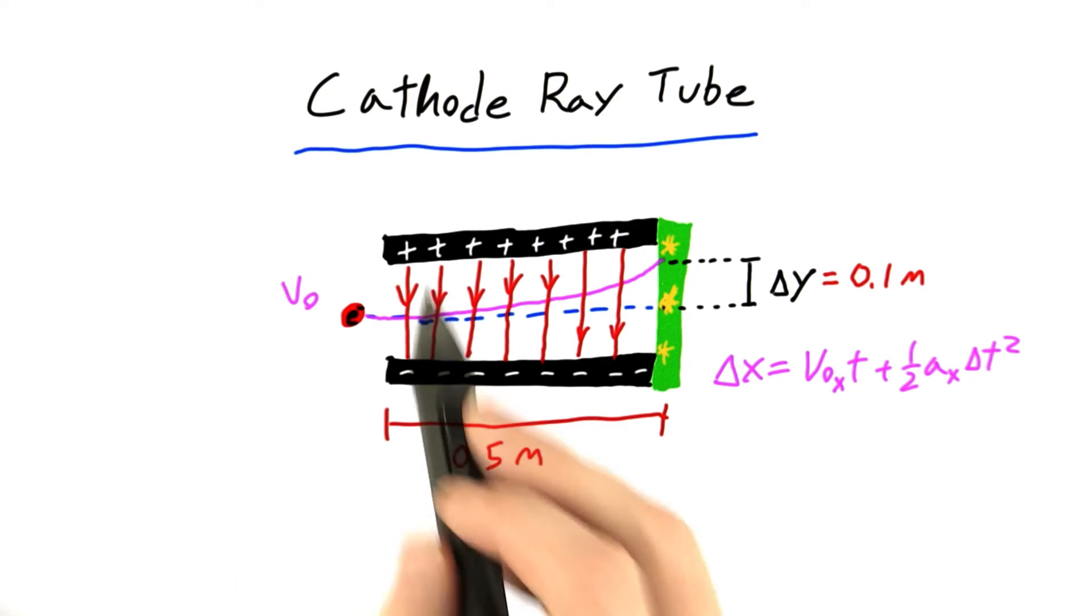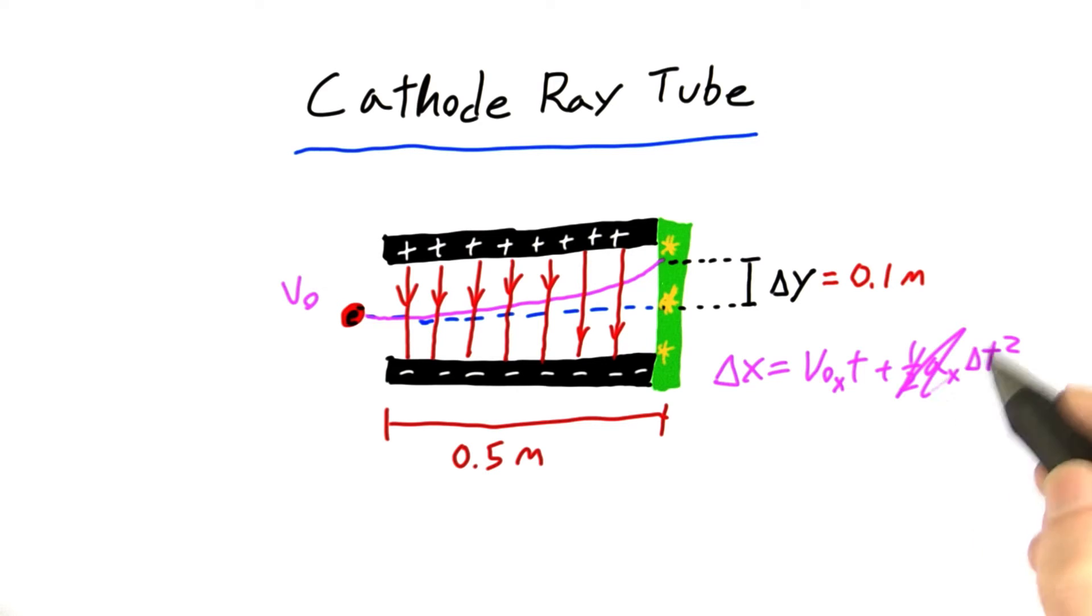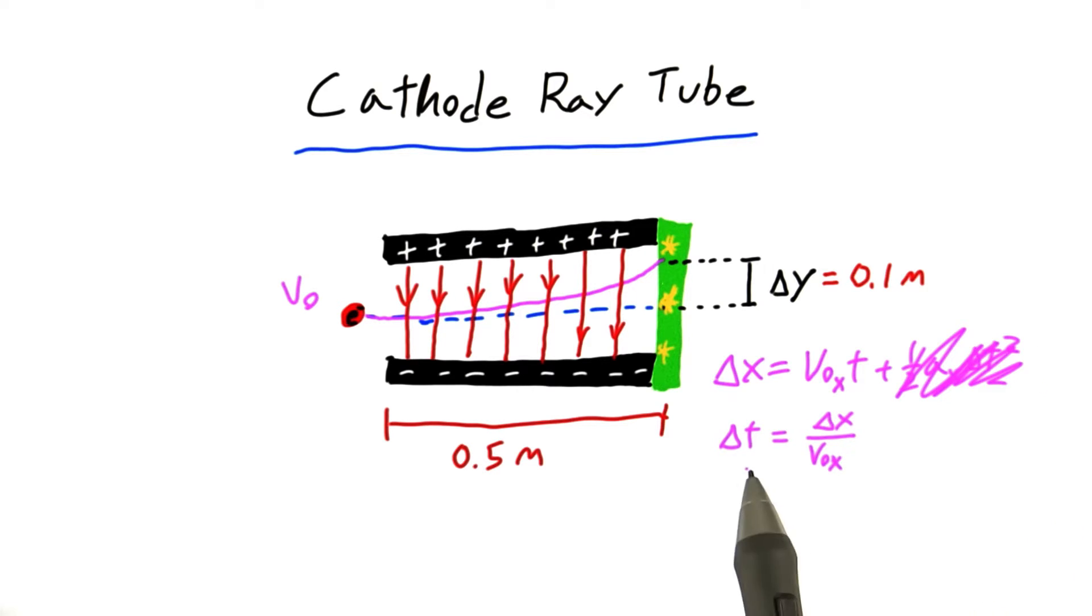So the field is only acting in the y direction, so I know there's not going to be any x acceleration. So this term drops out. And this gives us that the time the electron spends in the field is equal to the length of the field divided by the speed the electron enters the field with.